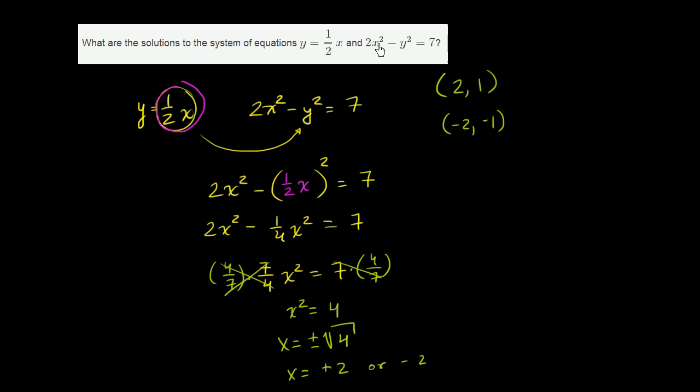2 times 2 squared is 4. 2 times that is 8 minus 1 squared is 7. 2 times negative 2 squared is still going to be 8 minus negative 1 squared still equals 7.